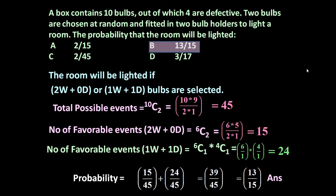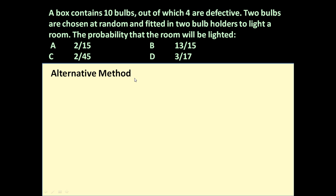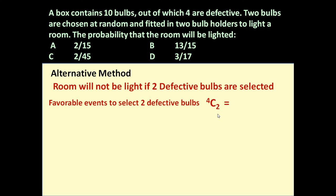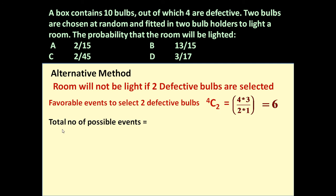Friends, the same problem can be solved by an alternative method. Here we determine the probability that the room will NOT be lighted. The room will not be lighted if 2 defective bulbs are selected. So let us determine this probability. Favorable events to select 2 defective bulbs: there are 4 defective bulbs and out of 4 we want to select 2, given by 4C2, which equals 4 × 3 divided by 2 × 1, equal to 6.